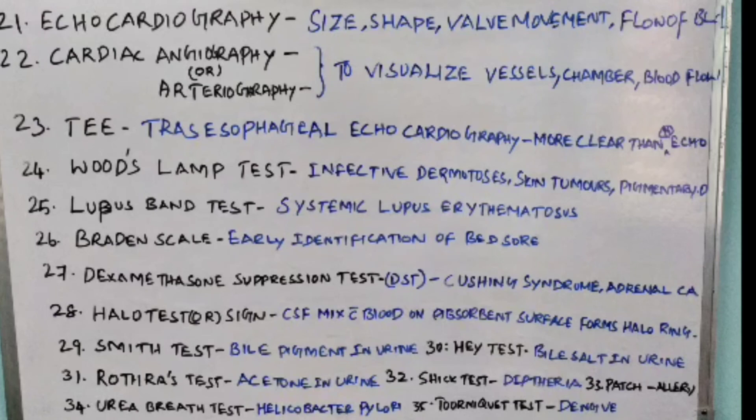Thirty-third point: Patch test, done in allergic disease. Thirty-fourth point: Urea breath test, done to find out H. pylori (Helicobacter pylori) infection.